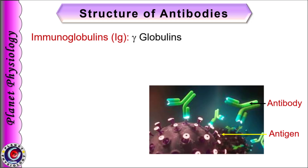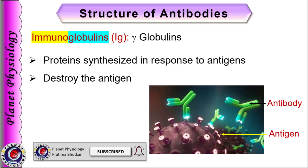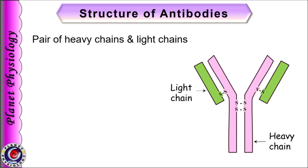Antibody is also known as immunoglobulin because they belong to the globulin family of plasma proteins and are involved in immune response. The word immunoglobulin is abbreviated as Ig. Antibodies belong to the gamma globulin family of plasma proteins and hence are also called gamma globulins. Antibodies are basically proteins synthesized in response to antigens and cause destruction of that same antigen. Each antibody consists of a pair of heavy chains and a pair of light chains arranged in the shape of Y, connected to each other by disulfide bonds.